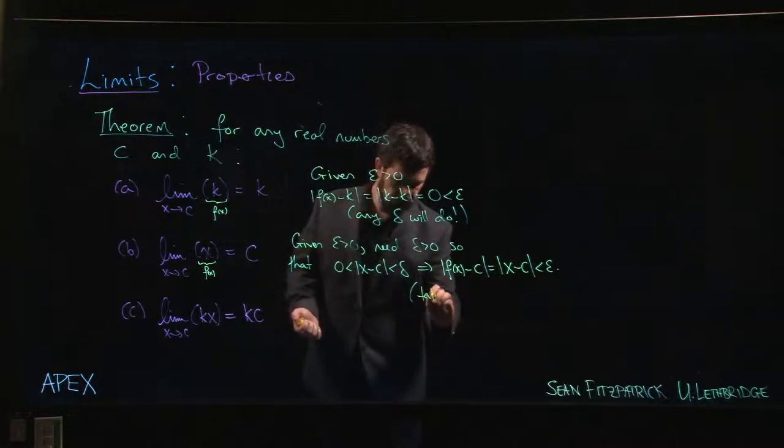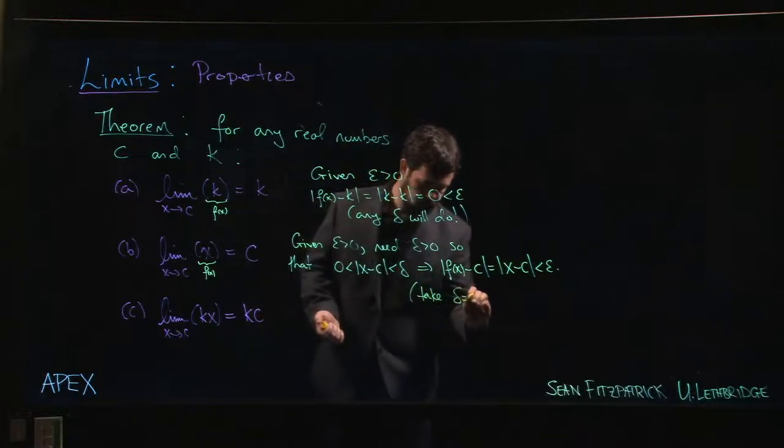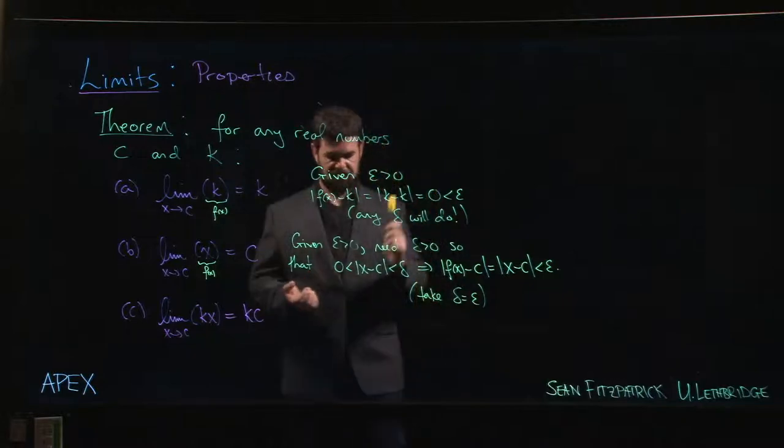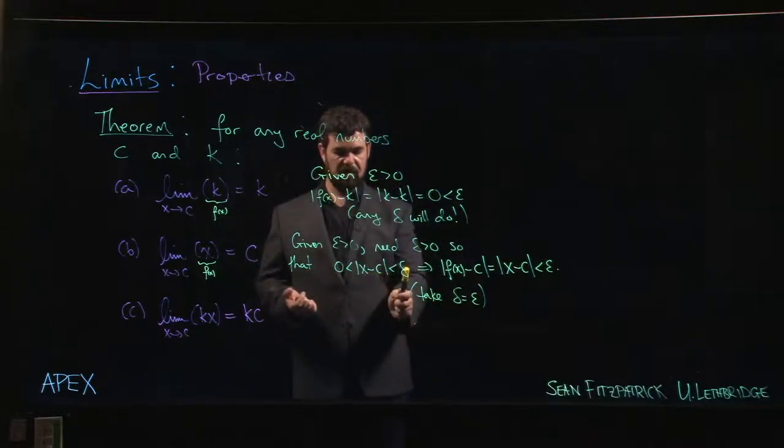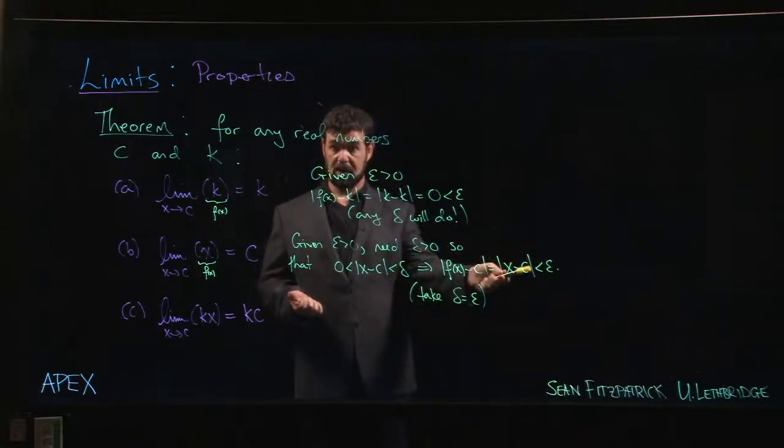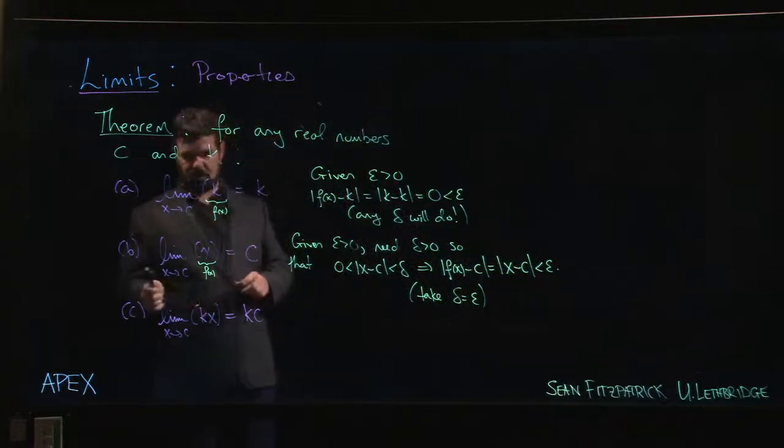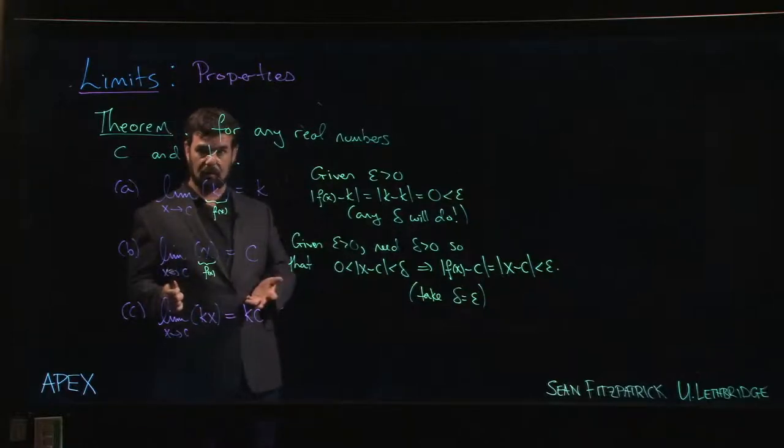Looks to me like we should probably take delta equal to epsilon. Then this is basically tautological. If the absolute value of x minus c is less than epsilon, then the absolute value of x minus c is less than epsilon. Nothing to it.